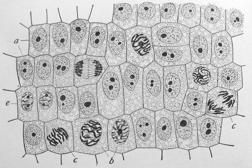Vacuoles sequester waste products and in plant cells store water. They are often described as liquid-filled spaces surrounded by a membrane. Some cells, most notably amoeba, have contractile vacuoles, which can pump water out of the cell if there is too much water. The vacuoles of plant cells and fungal cells are usually larger than those of animal cells.